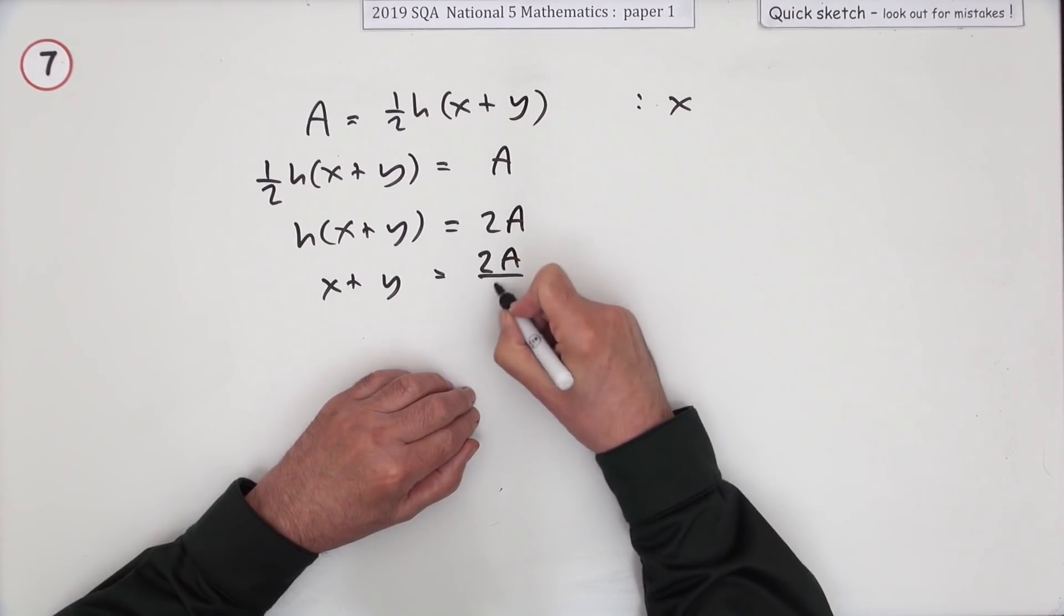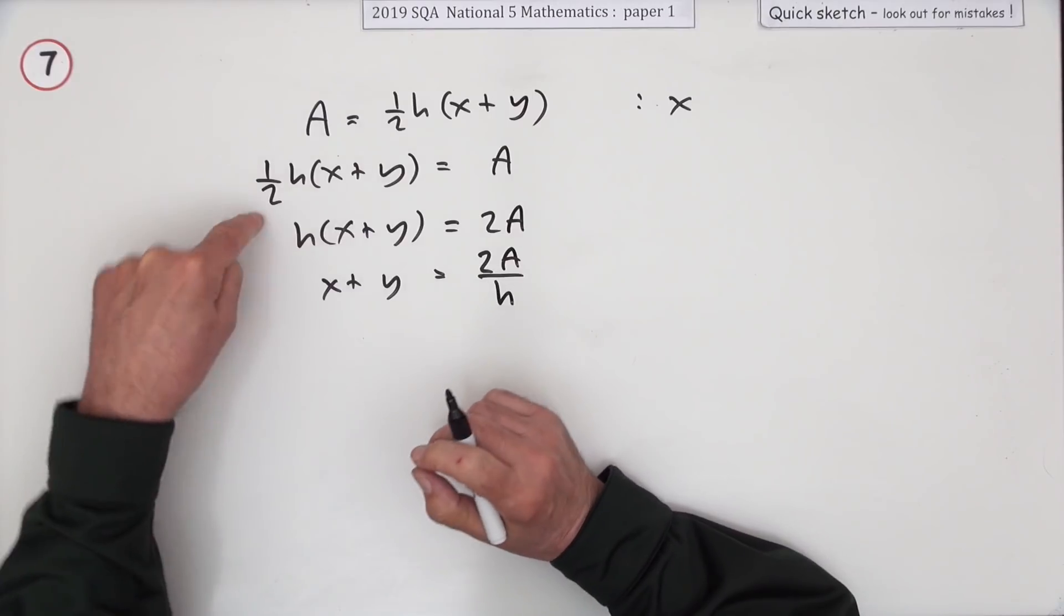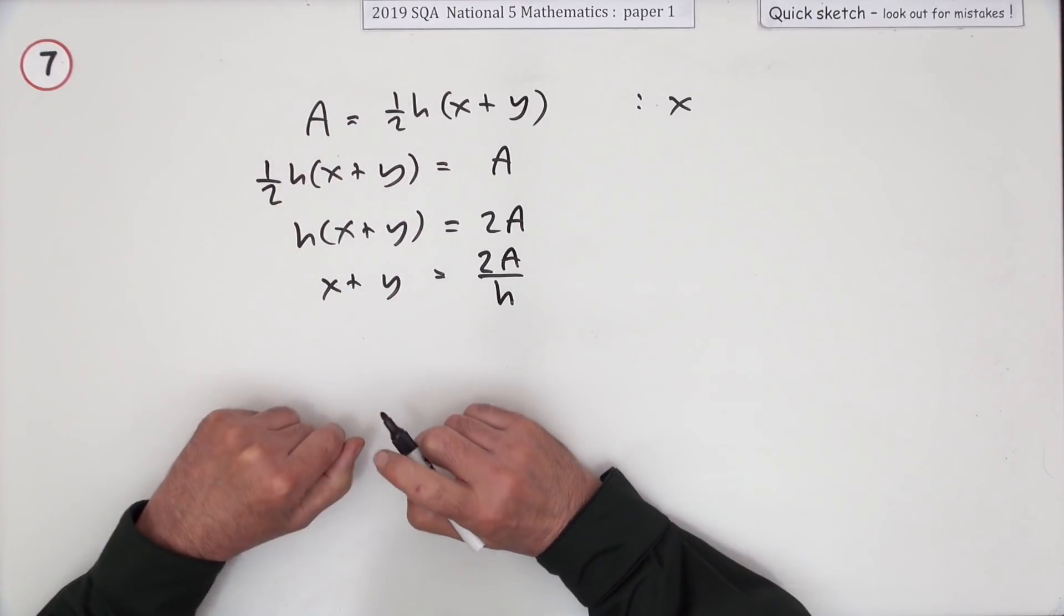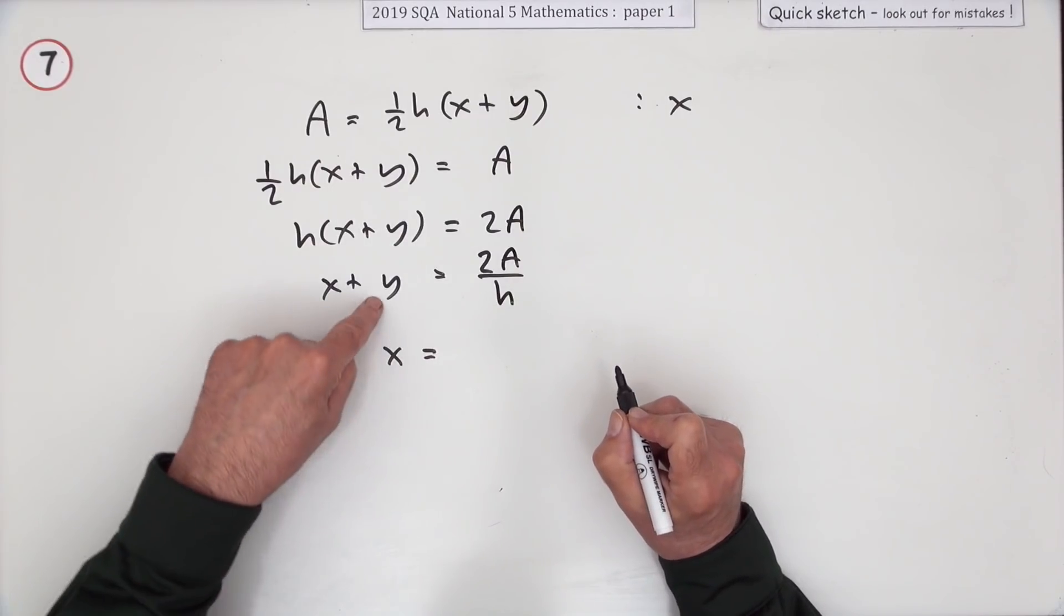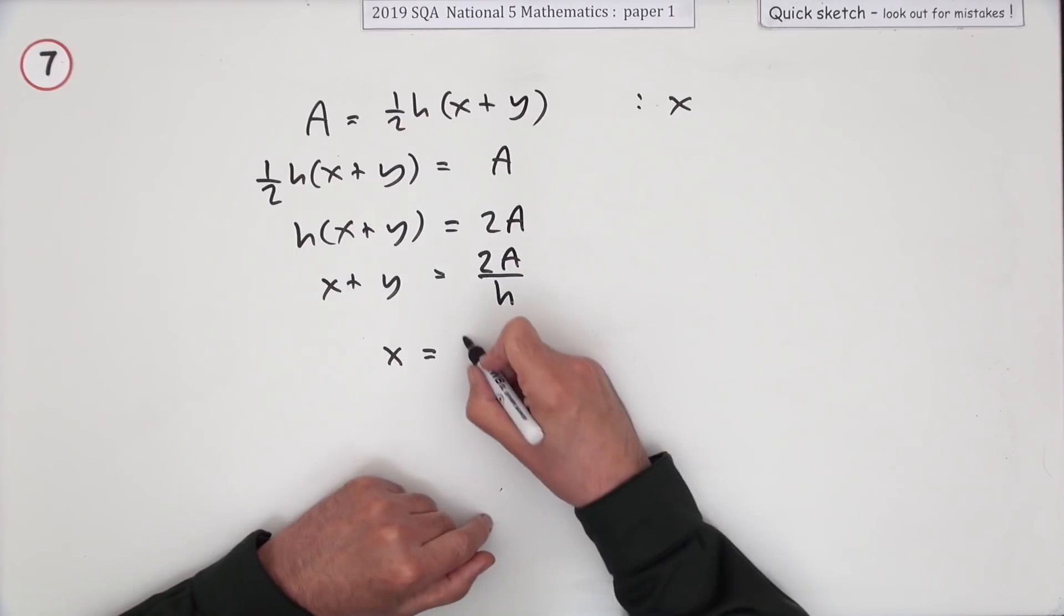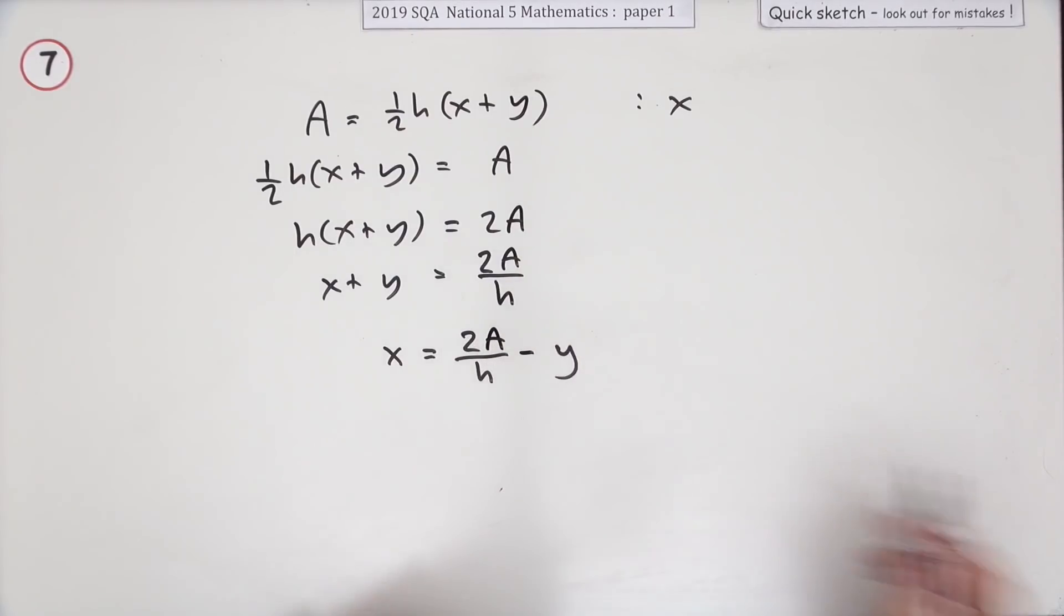So it's 2A upon h. Normally you'd have written that in one go - divide, multiply by the two and divide by the h. That's almost done because there's only one thing left to get rid of and that's the y. It'll go across and subtract, so you've got x = 2A/h - y.